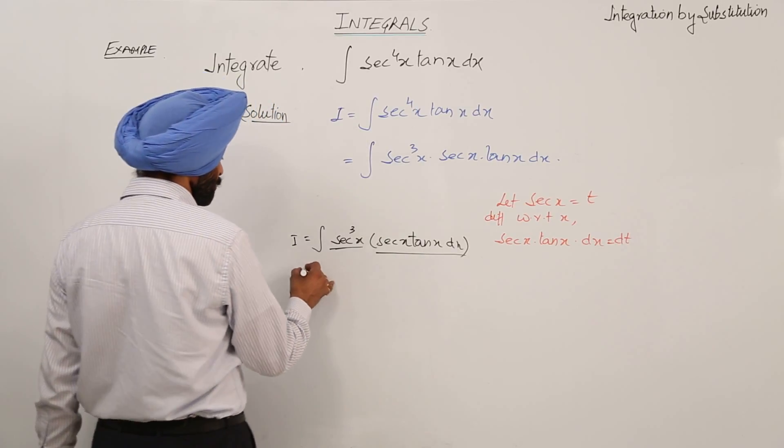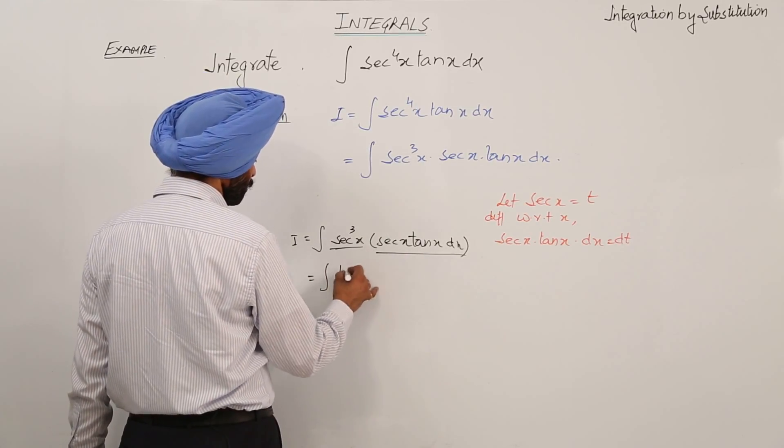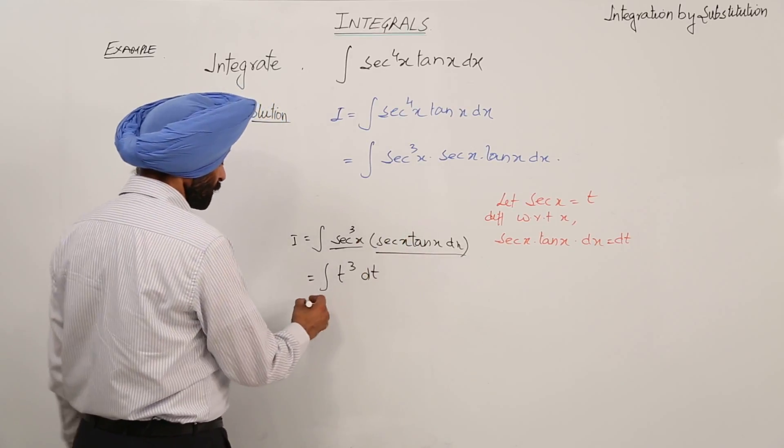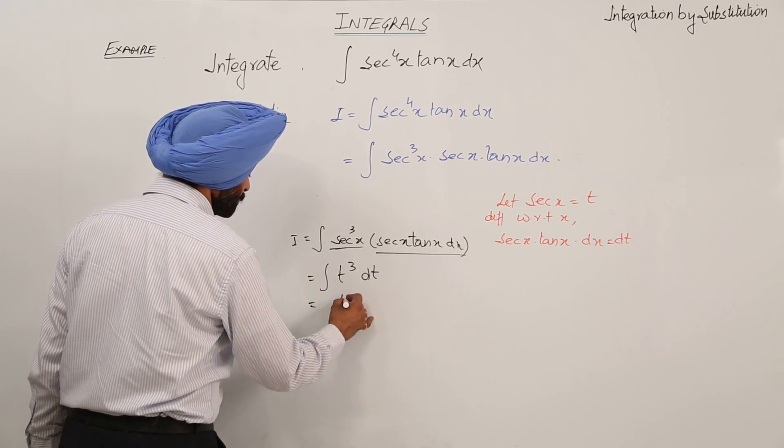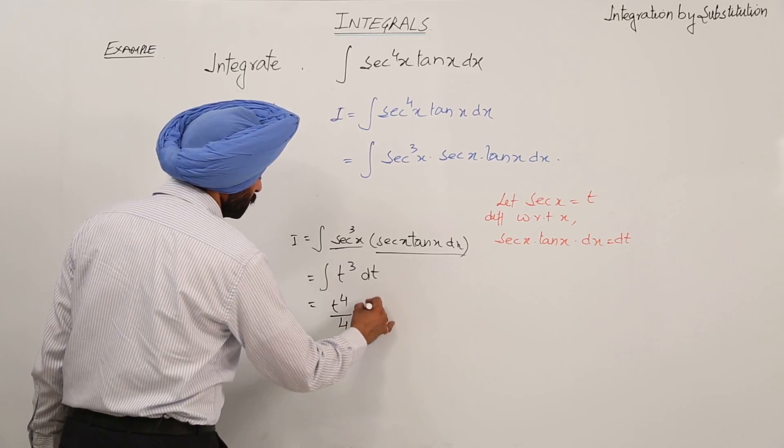So now substituting, integration of t cube dt. So finally we are having t raised to power 4 upon 4 plus c.